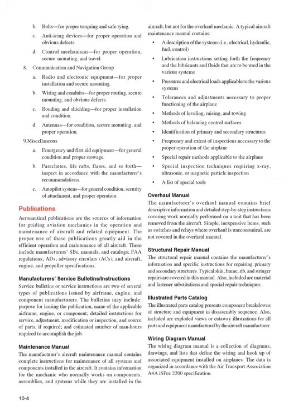The manufacturer's aircraft maintenance manual contains complete instructions for maintenance of all systems and components installed in the aircraft. It contains information for mechanics working on installed components and specific instructions for repairing primary and secondary structures. Typical skin, framed rib, and stringer repairs are covered, along with material and fastener substitutions and special repair techniques. The illustrated parts catalog presents component breakdowns in disassembly sequence, with exploded views or cutaway illustrations. The wiring diagram manual is a collection of diagrams, drawings, and lists defining wiring and hookup of equipment, organized per ATA/A4A iSpec 2200 specification.